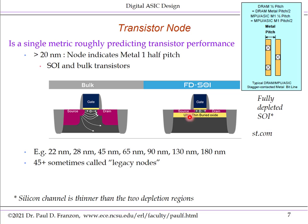A variant of SOI illustrated here is fully depleted, meaning the channel is thin in the vertical dimension — thinner than two depletion regions, so it can become fully depleted of carriers. The voltage on the gate modulates the channel current formed by electrons or holes. Common nodes using these transistor types are 22, 28, 45, 65, 90, 130, and 180 nanometer, and people still fabricate circuits in all of these. The nodes at 45 nanometer and above are sometimes called legacy nodes, but there's still a lot of capacity being produced in them.